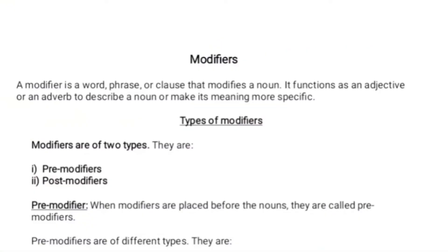Our topic is Modifiers, and as it is a revision class, I would like to have a general discussion — just a revision or giving you a reminder. A modifier is a word, phrase, or clause that modifies another word or noun. It functions as an adjective or an adverb to describe a noun or make its meaning more specific. There are two types of modifiers: pre-modifiers and post-modifiers.